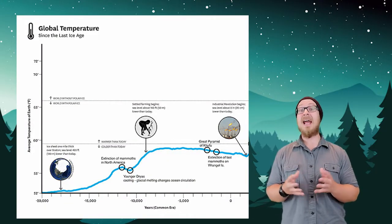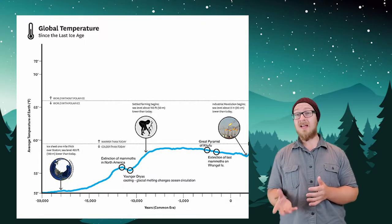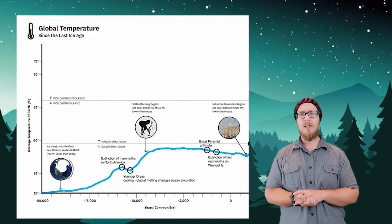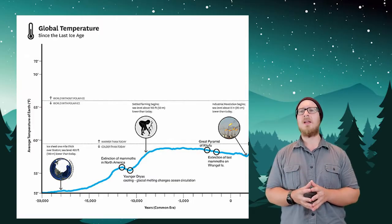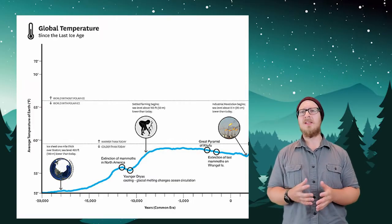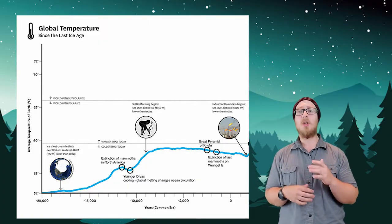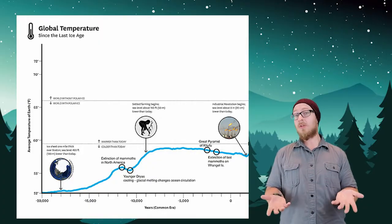One of the more recent natural changes that has occurred is the end of the last ice age, which ended about 11,000 years ago. That change was more or less due to slight changes in the Earth's orbit that resulted in the polar ice caps getting a little bit more sunlight, causing the ice to melt and change the climate.